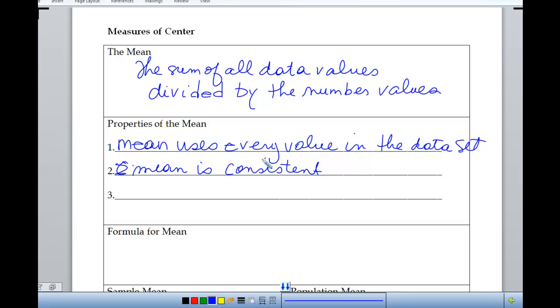And the last thing is, disadvantage is that it's affected by extreme values. Since every value goes into the mean, then if I have an outlier or some extreme values, it's going to affect the mean, and we'll see that in an example in just a minute. Any questions about that? One of the things you should be thinking about is if I ask a question about which measure is the best measure of center. So that's why I'm pointing out some of these properties of different measures of center.